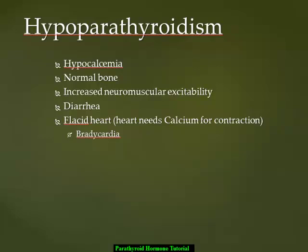So, in the case of the skeletal muscle, we'll have increased neuromuscular excitability. It will be easier for an action potential to be generated at the skeletal muscle. The smooth muscle will also increase its activity and will end up with diarrhea. And then the cardiac muscle develops what we call a flaccid heart. So, the heart needs calcium for contraction. And with low amounts of calcium, we find that the patient becomes bradycardic.